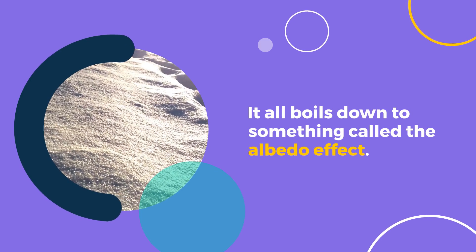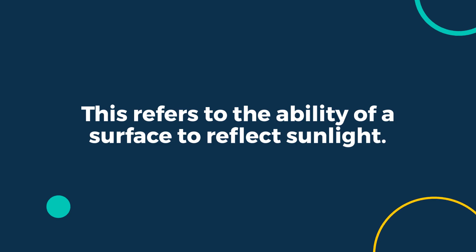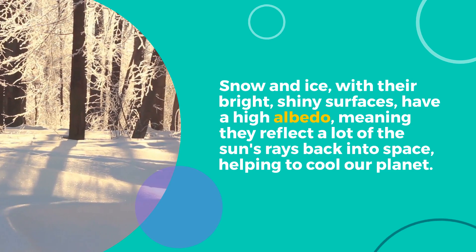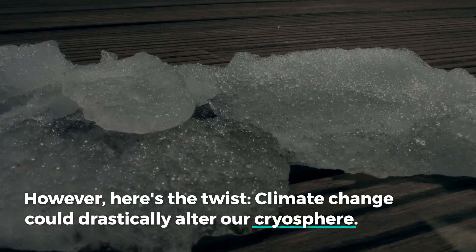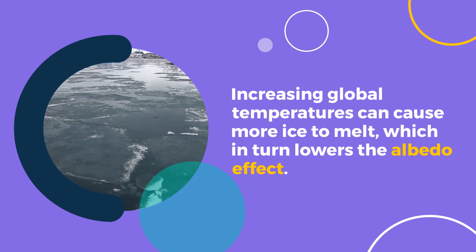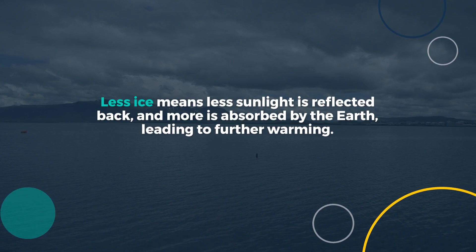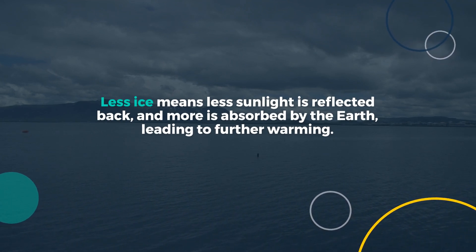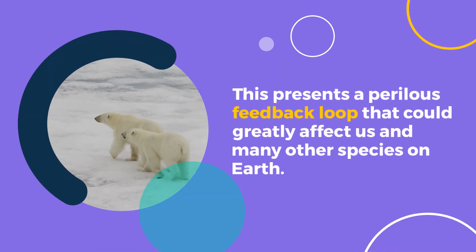It all boils down to something called the albedo effect. This refers to the ability of a surface to reflect sunlight. Snow and ice, with their bright, shiny surfaces, have a high albedo, meaning they reflect a lot of the sun's rays back into space, helping to cool our planet. However, here's the twist: climate change could drastically alter our cryosphere. Increasing global temperatures can cause more ice to melt, which in turn lowers the albedo effect. Less ice means less sunlight is reflected back, and more is absorbed by the Earth, leading to further warming. This presents a perilous feedback loop that could greatly affect us and many other species on Earth.